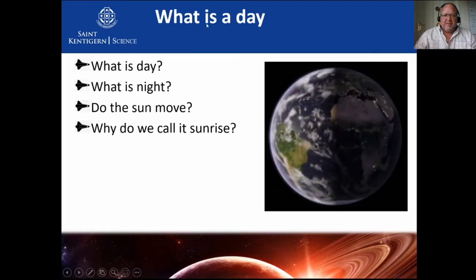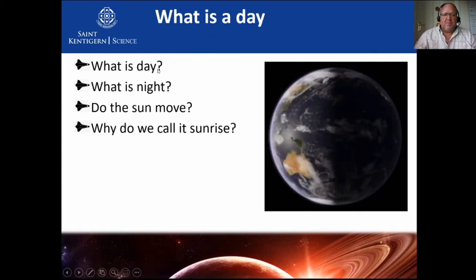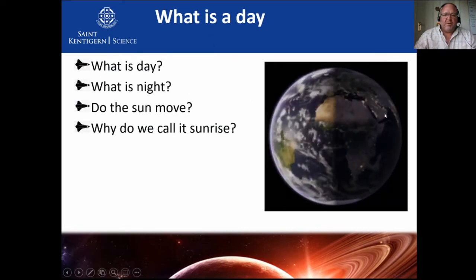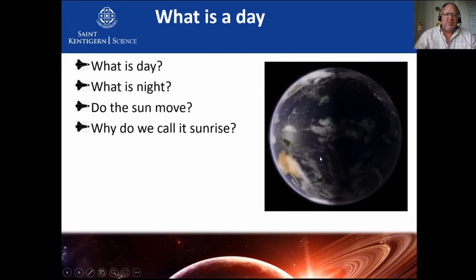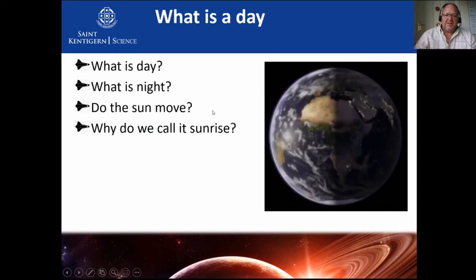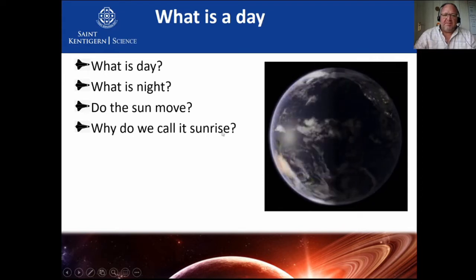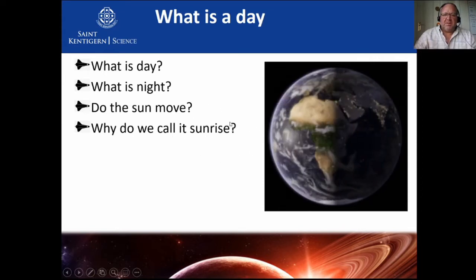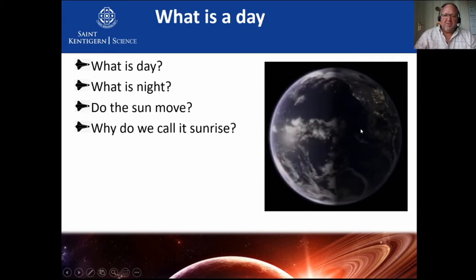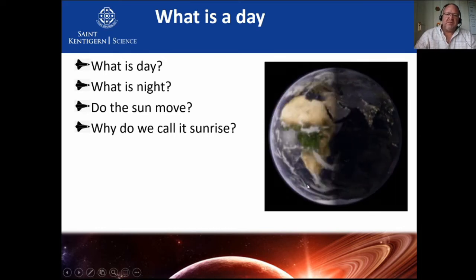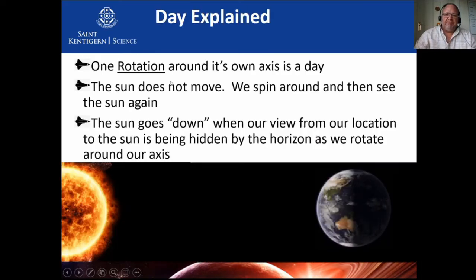Yesterday we talked about what a day is, and we said that a day is one rotation of the Earth around its own axis. We said the Sun doesn't move—it's actually not correct to say sunrise. We're basically coming into the light, and you can see there goes New Zealand into the darkness. So one rotation is one day.